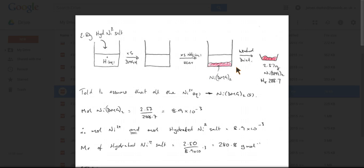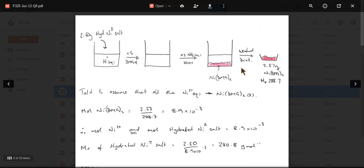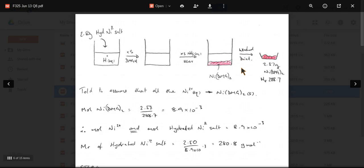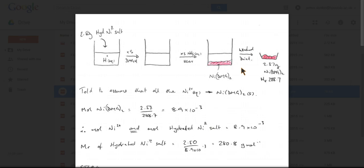That's then washed and dried and we're told that we've got a certain mass, 2.57 grams of NIDMG twice. And we were told that its MR was 288.7. So if you're panicking at this point in the exam, just be thinking, well, I could calculate the moles of that because I've got the mass and the MR.